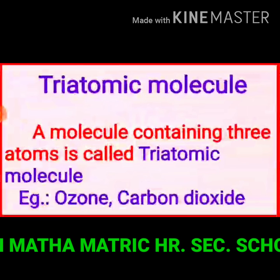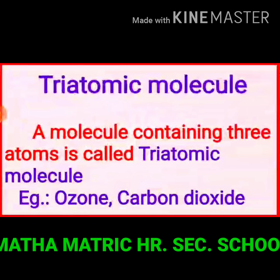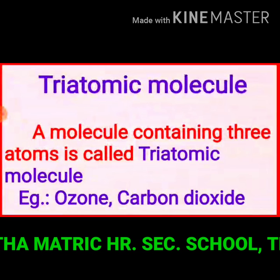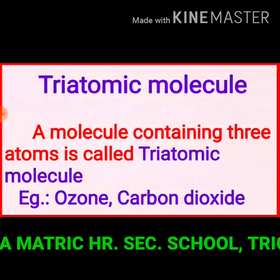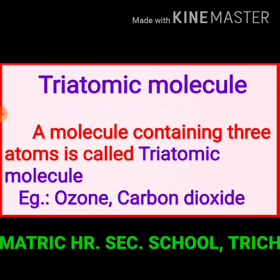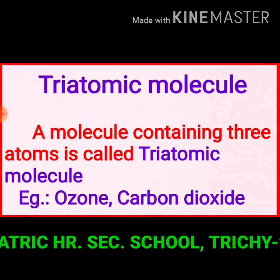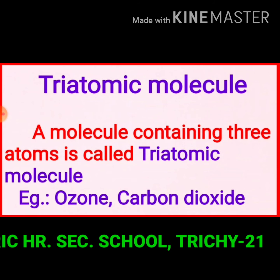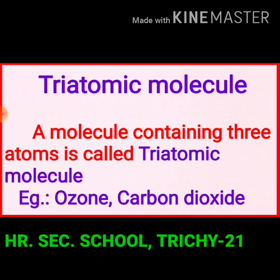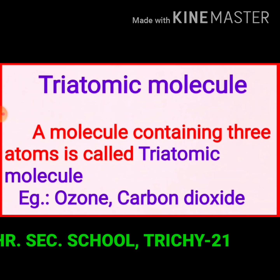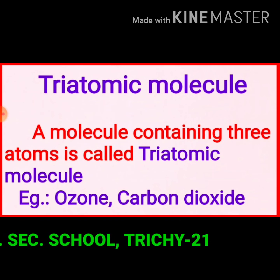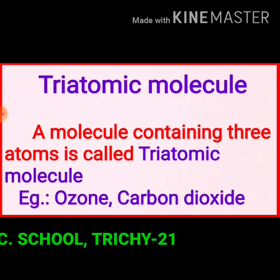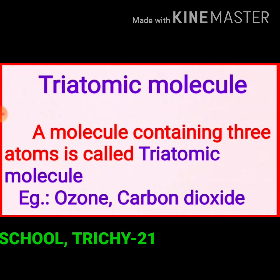Triatomic molecule. Tri means three. A molecule containing three atoms is called a triatomic molecule. Ozone, carbon dioxide, and ammonia are examples of triatomic molecules. In ozone, three oxygen atoms are combined to produce an ozone molecule. In carbon dioxide, one carbon combines with two oxygen atoms to produce a triatomic molecule.